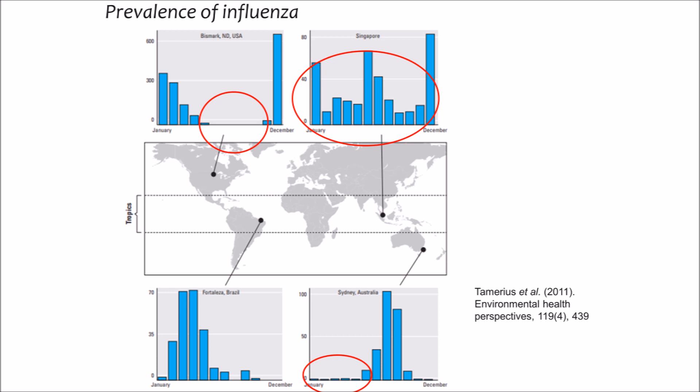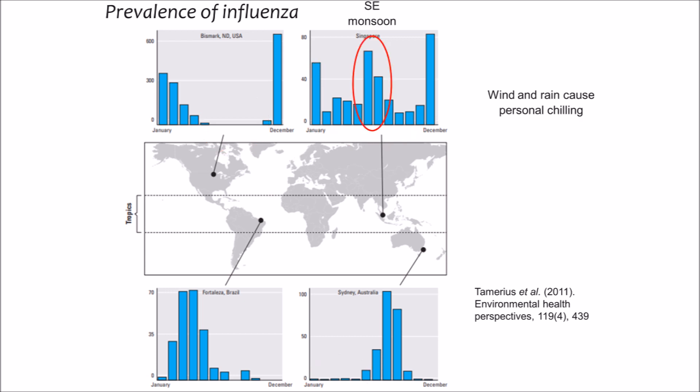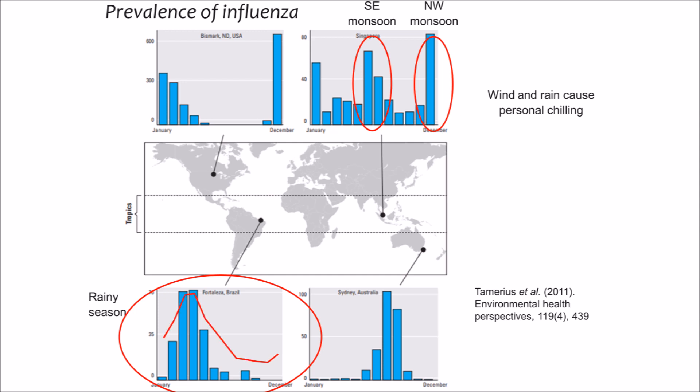Wind and rain aren't strongly correlated with these illnesses in temperate regions. But in the tropics, wind and rain are correlated with respiratory illness. For example, this spike of flu in Singapore coincides with the south-eastern monsoon, and this one with the north-western monsoon. And here in Fortaleza, which is in northern Brazil, flu and other respiratory illnesses occur during the rainy season.